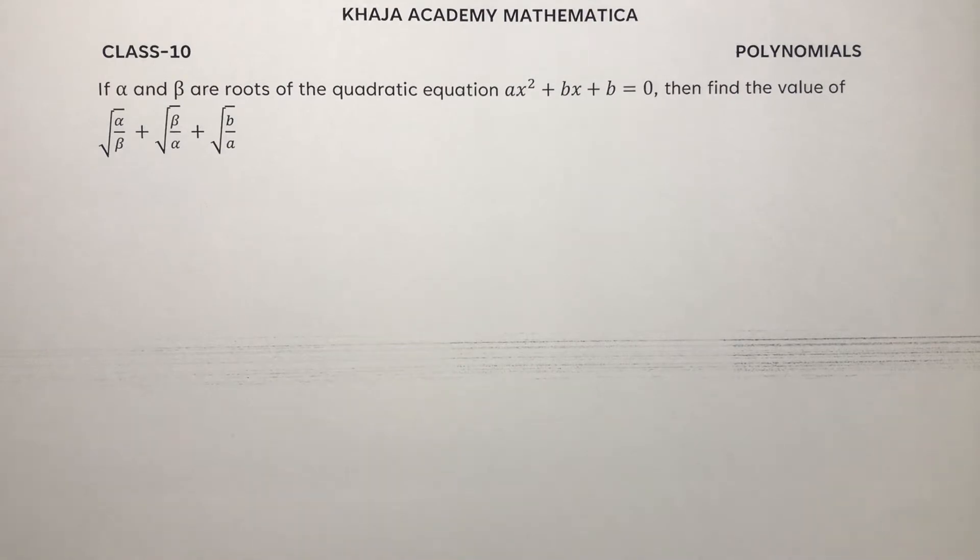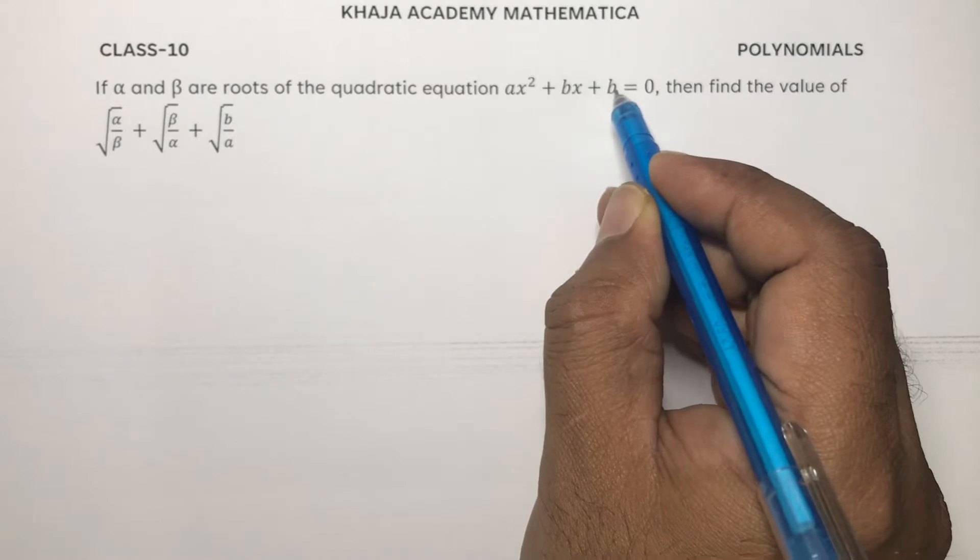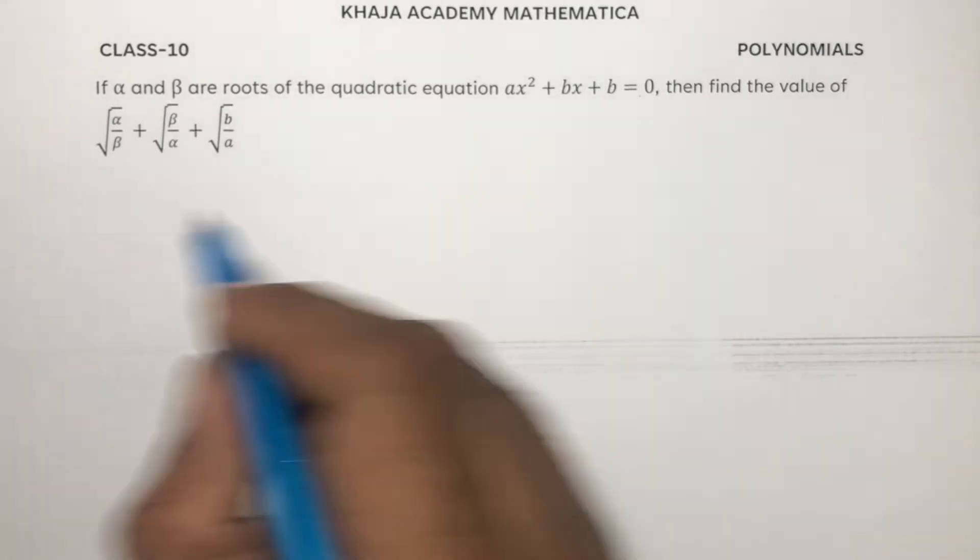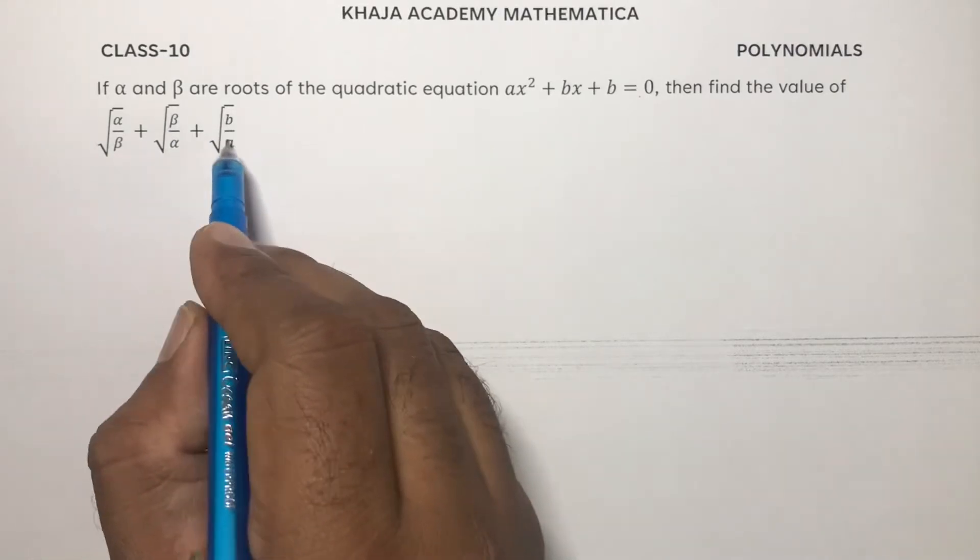If alpha and beta are the roots of the quadratic equation ax square plus bx plus b equals 0, then find the value of root alpha by beta plus root beta by alpha plus b by a.